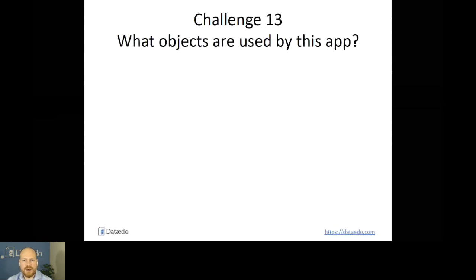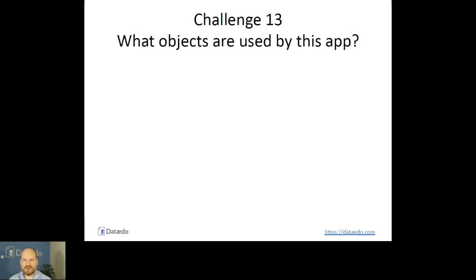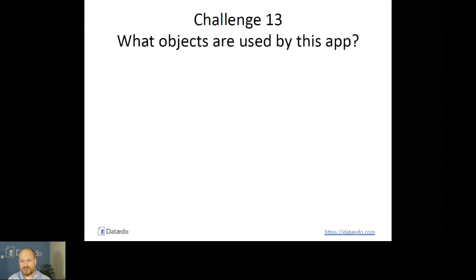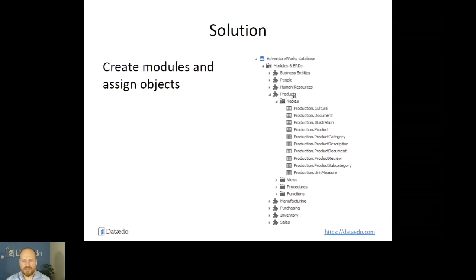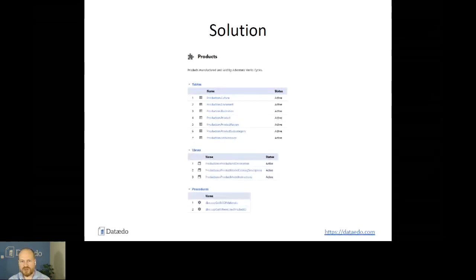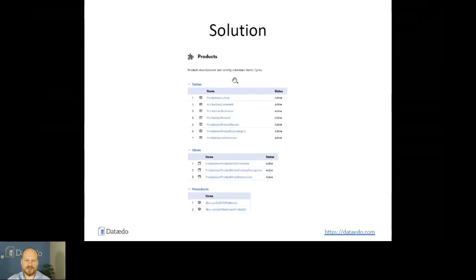Challenge number thirteen: what objects are used by a particular app module or functionality? Imagine you have a large database developed over many years, and you've created a small piece of functionality. You'd like to know what tables are related to it, what procedures, where the logic sits. The answer is: create modules. When you create a module for specific functionality — it could be a report, a module in an application, or a separate application — you define the module and assign different types of objects to it. That gives you a single page with a description of the functionality, an owner, and a list of all the related objects.